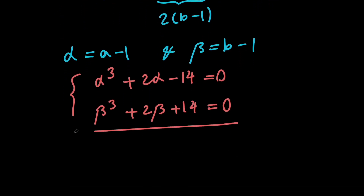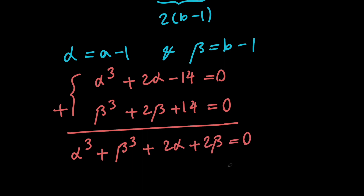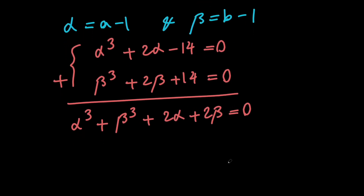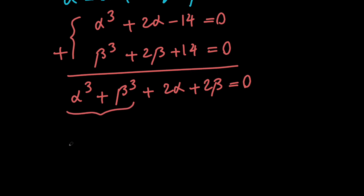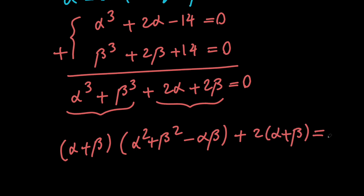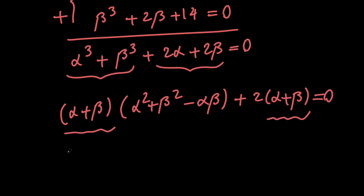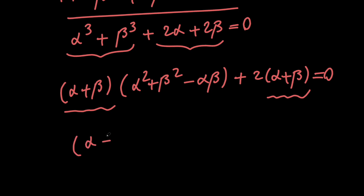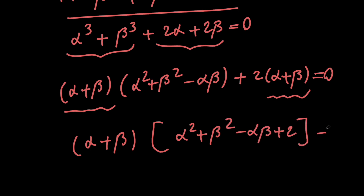Next, let's add these two equations. We get alpha cubed plus beta cubed plus 2 alpha plus 2 beta equals 0. Let's factor the left hand side. We have a sum of two cubes, so we factor it into alpha plus beta times the quantity alpha squared plus beta squared minus alpha times beta. Then we factor out a 2 from the remaining terms to get 2 times alpha plus beta. So alpha plus beta is a common factor, giving us alpha plus beta times the quantity alpha squared plus beta squared minus alpha beta plus 2, and the whole thing equals 0.